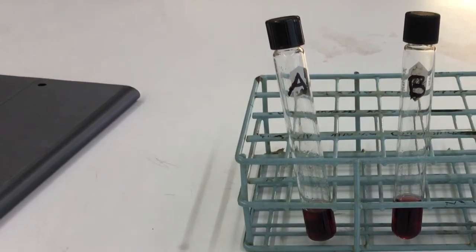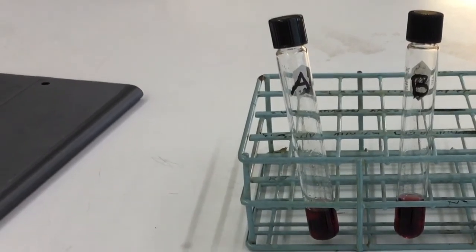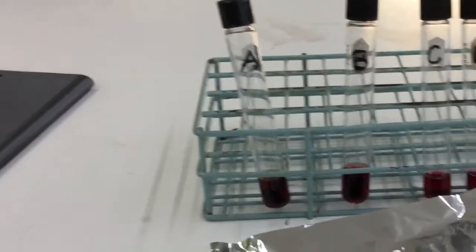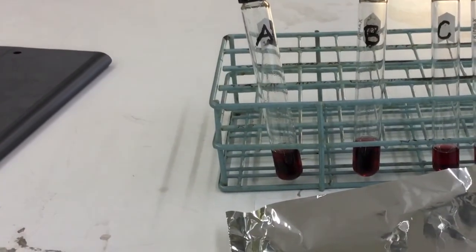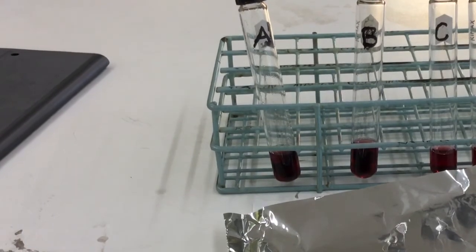Test tubes A and D will be completely covered in tinfoil, using tinfoil like that there, and so that A and D will be in the dark.